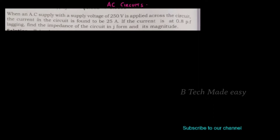When an AC supply with a supply voltage of 250 volts is applied across the circuit, the current in the circuit is found to be 25 amperes. If the current is at 0.8 power factor lagging, then find the impedance of the circuit in the J-form and its magnitude.